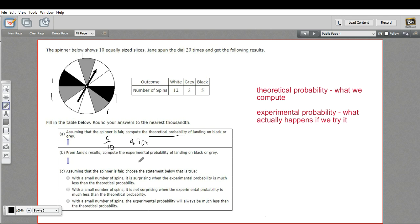Then it says from Jane's results, compute the experimental probability. So gray and black is three and five. So that's eight. And this is out of 20 tries. So eight out of 20 is four out of ten. So that looks like 0.4.